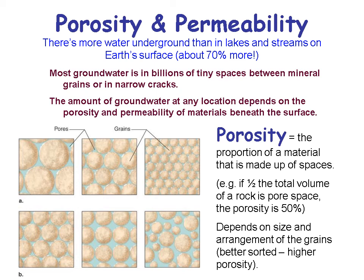The Earth's groundwater flows through holes in earth material called pores. The pores are between the grains of what's in the earth — bedrock, regolith, or anything under the earth. The definition of porosity is the proportion of a material that's made up of spaces. So if half a rock is made up of grains, then 50% would be pores and you'd have 50% porosity.